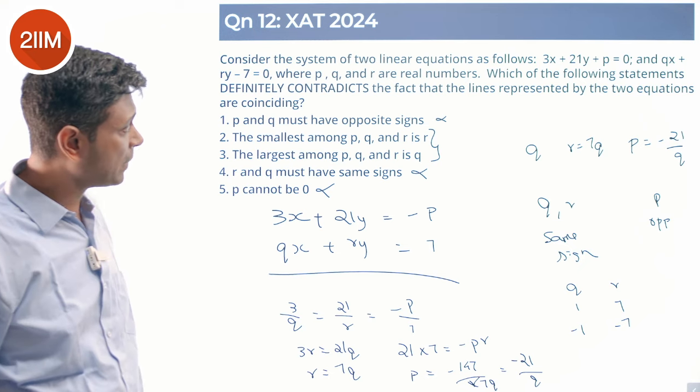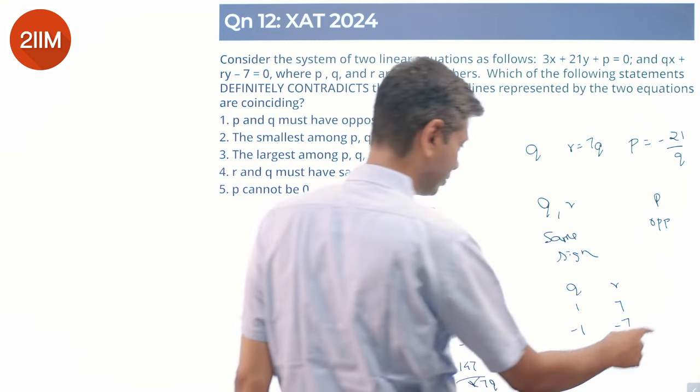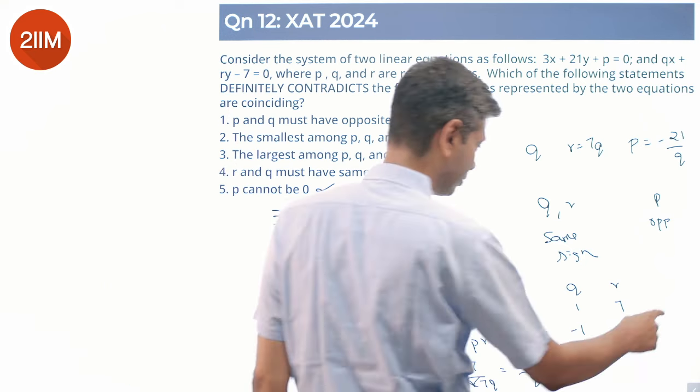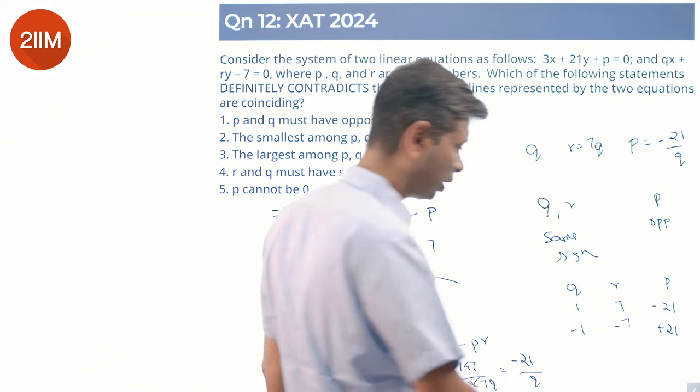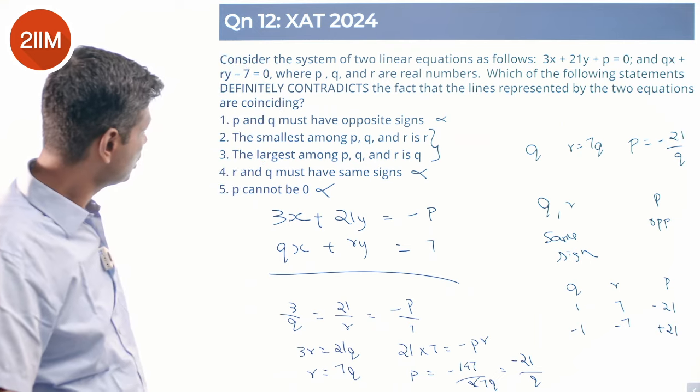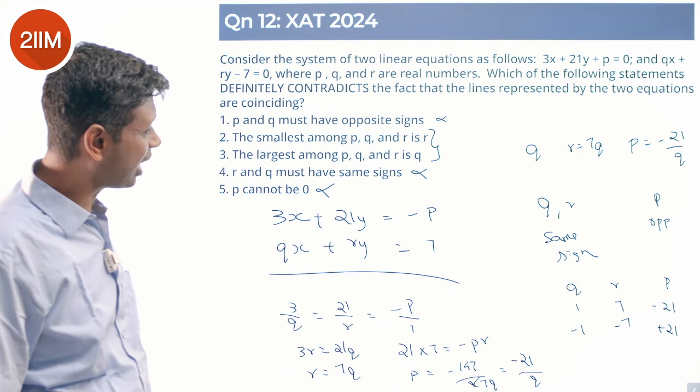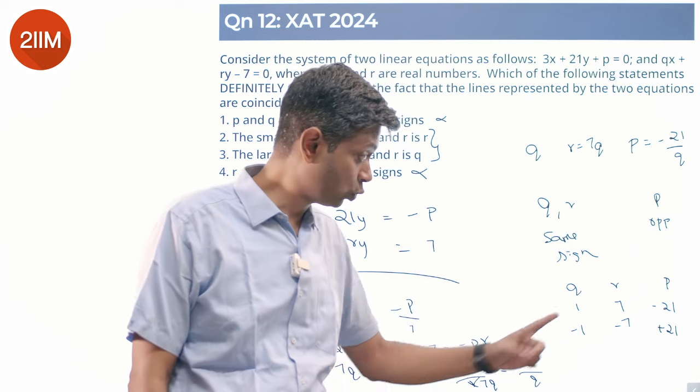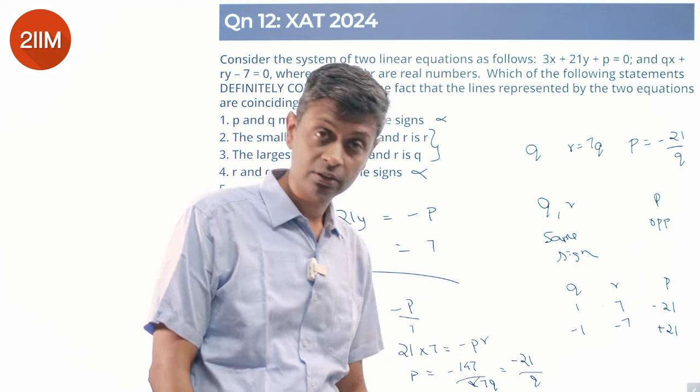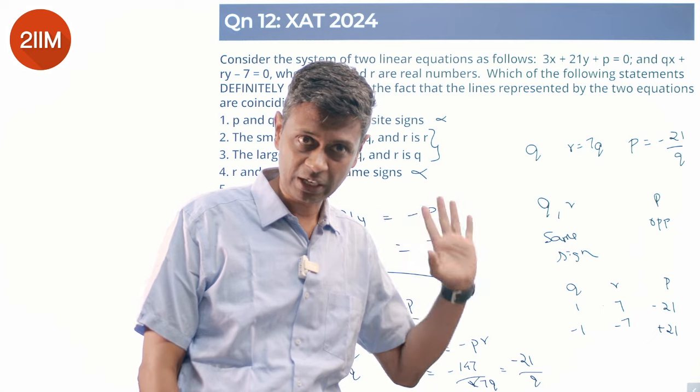P is minus 21 by 1, which is minus 21, or plus 21. Both are possible. So the smallest among p, q, and r is r? The smallest is not r in this case. The smallest is r here. The smallest could be r and the smallest need not be r.